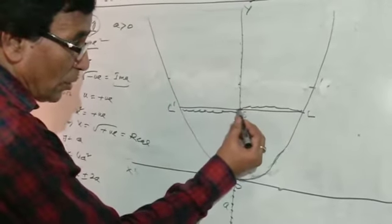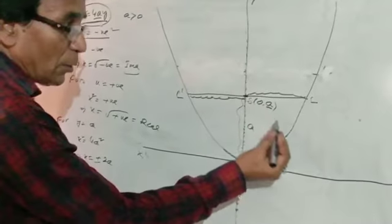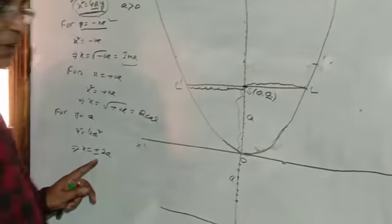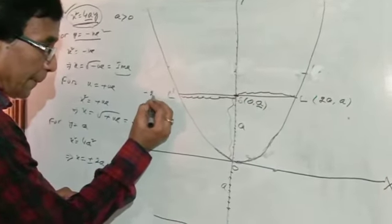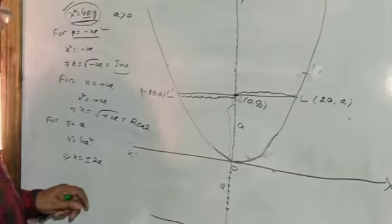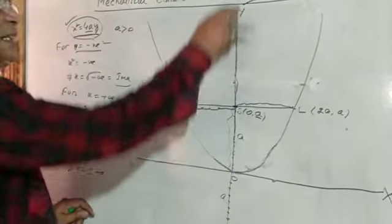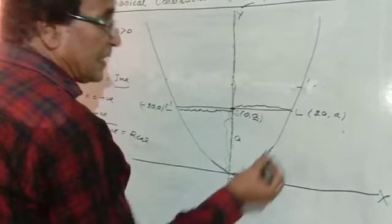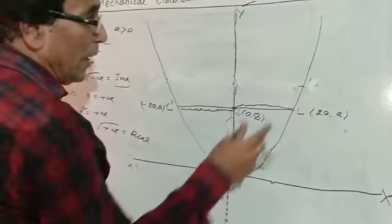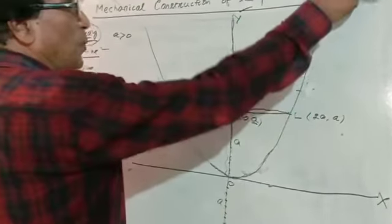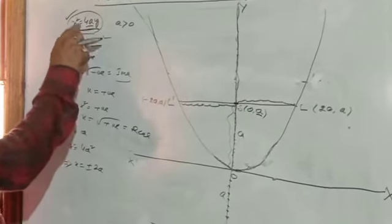For y = a, we get two values of x: +2a and -2a. The focus is at (0, a), lying on the y-axis. When y tends towards infinity, x also increases infinitely in both directions — one value tends to +∞ and another to -∞. This completes the mechanical construction of the curve x² = 4ay.